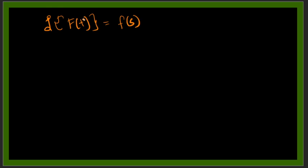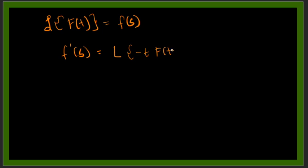If we take the derivative of F(s) — the derivative of the transform — according to the theorem of the Laplace transform, this will be equal to the Laplace transform of negative t times f(t). So the derivative of a Laplace transform is equal to the Laplace transform of the function f(t) multiplied by negative t.